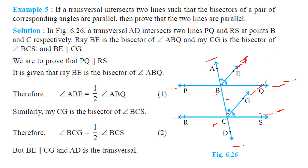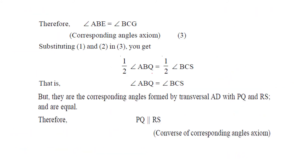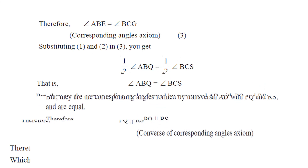Since BE is the angle bisector of angle ABQ, angle ABE equals half of angle ABQ. Similarly, angle BCG equals half of angle BCS. Since BE is parallel to CG, angle ABE equals angle BCG as corresponding angles. Multiplying both sides by 2, angle ABQ equals angle BCS. These are corresponding angles formed by transversal AD with PQ and RS, so PQ must be parallel to RS.